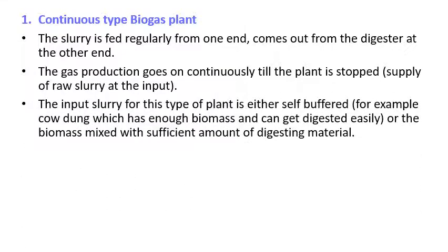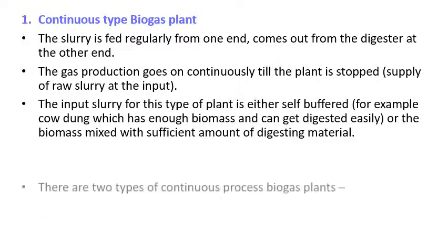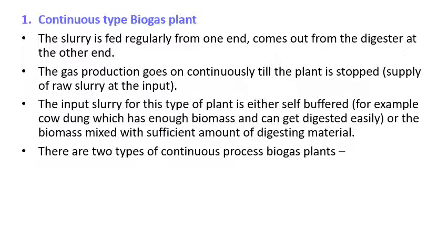The input slurry for the continuous type plant is either self-buffered — meaning an agent like cow dung that has enough biomass to activate methane gas production — or the biomass is mixed with a sufficient amount of digested material. You can blend cow dung with other living or dead organisms to form the slurry input.